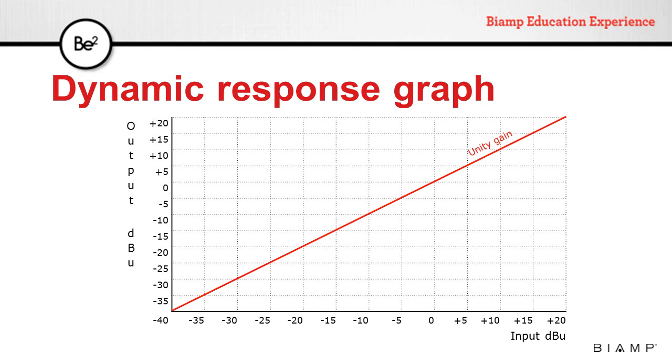If we draw a diagonal line through this graph, we get a unity gain graph. Any input level will give us the exact same output level.